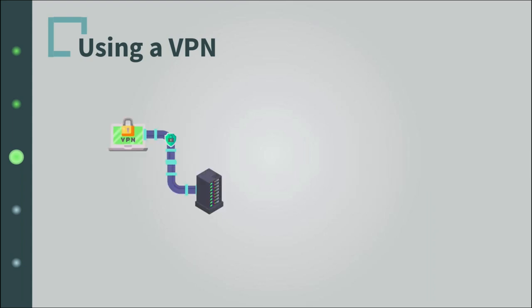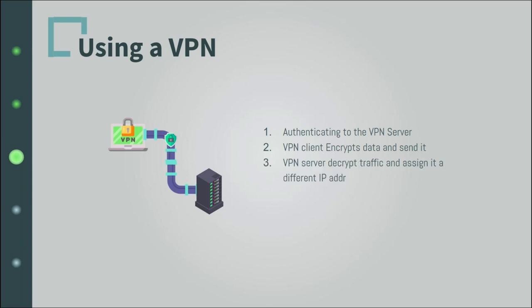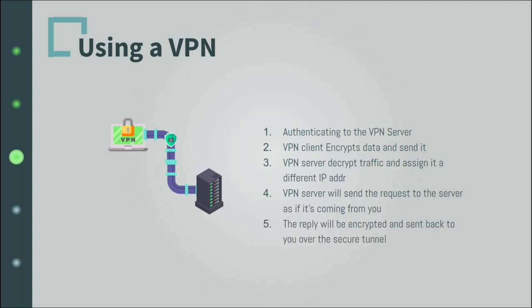Once you have a VPN server available and the VPN client installed, the first thing is to authenticate to the VPN server. The VPN now creates a tunnel between you and the VPN server and all your online activity must pass through it. Your internet service provider cannot detect this channel thanks to the encryption. Before anything is sent, the VPN client encrypts data and sends it to the VPN server through the secure tunnel. The VPN server decrypts the data and assigns it a different IP address that makes you appear to exist on the local network of the VPN. Then the VPN server sends your requests to the destination, receives the reply, encrypts it, and sends it back to your computer. The VPN client then receives and decrypts the message.